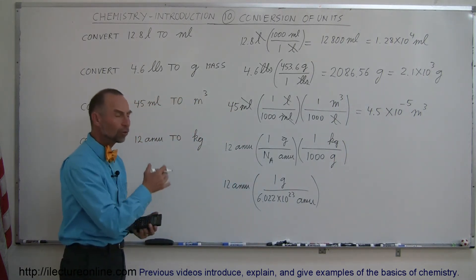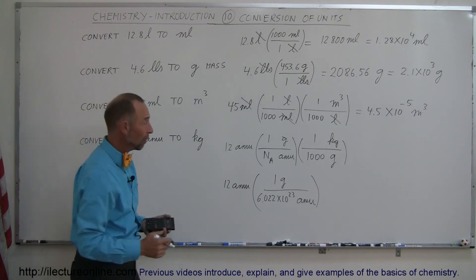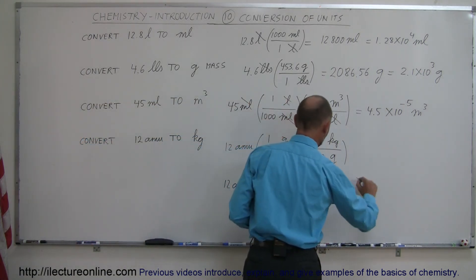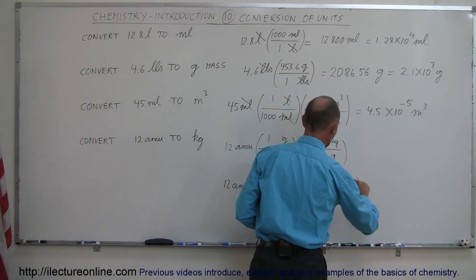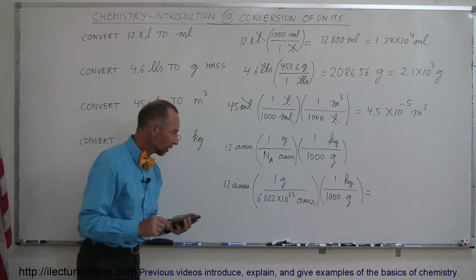Avogadro's number is really the ratio between grams and AMUs, both units of mass. And we still need the second conversion where we go from kilograms to grams. One kilogram is a thousand grams. Now we can go ahead and do that conversion.